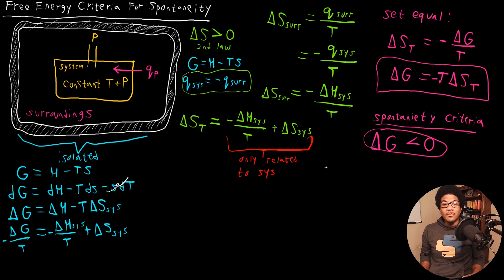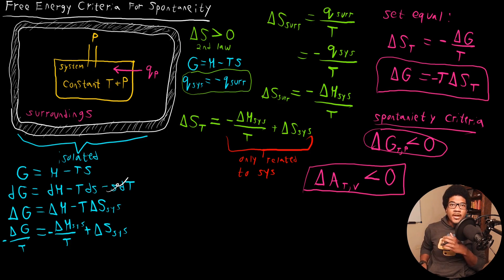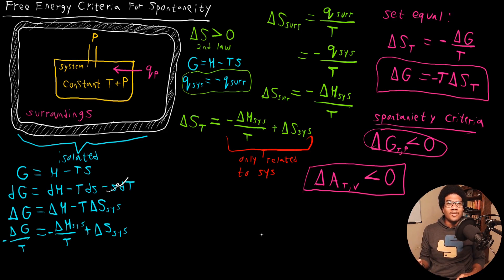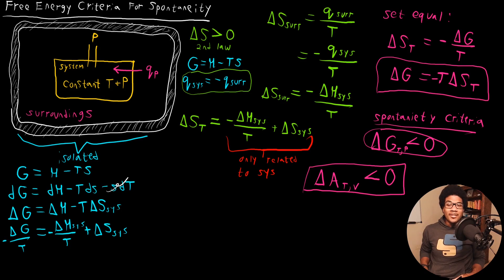You can go through a similar exercise if instead of holding temperature and pressure constant, you hold temperature and volume constant. That gives a similar expression for the Helmholtz free energy, which is spontaneous when it is less than zero at constant temperature and volume. You're probably more familiar with Gibbs than Helmholtz because most chemistry is done on a benchtop at constant atmospheric pressure, making Gibbs free energy very useful. Helmholtz free energy applies to constant-volume processes, which are more common in physics. Gibbs free energy is extremely useful to chemists for constant-pressure processes.